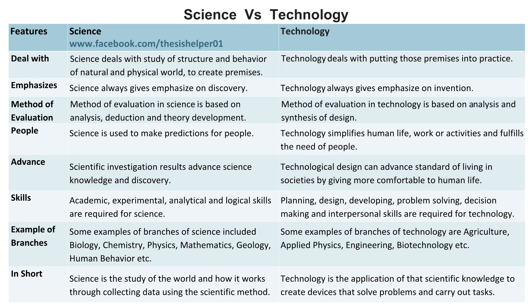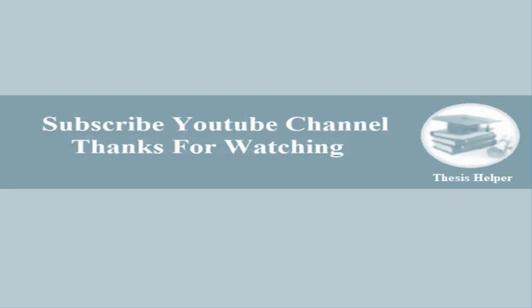In short, science is the study of the world and how it works through collecting data using the scientific method, whereas technology is the application of that scientific knowledge to create devices that solve problems and carry out tasks. Technology is the application of the scientific method and physical method of learning practice. Thank you.